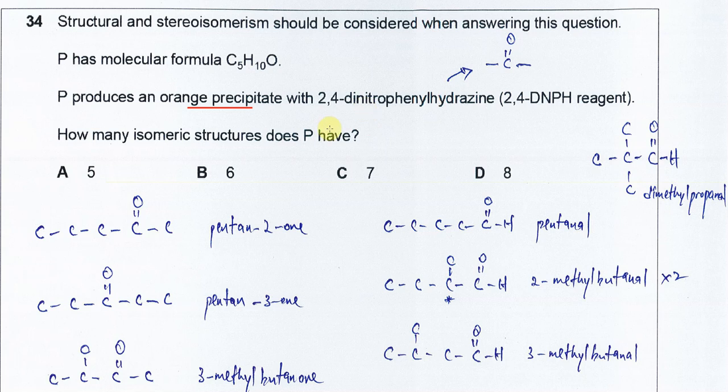For the ketone, we start with the longest carbon chain, 5 carbons. So we can have this ketone and this ketone at different positions. And we can have the 4-carbon length chain with one branch. So this one can be another ketone, 3-methylbutanone.